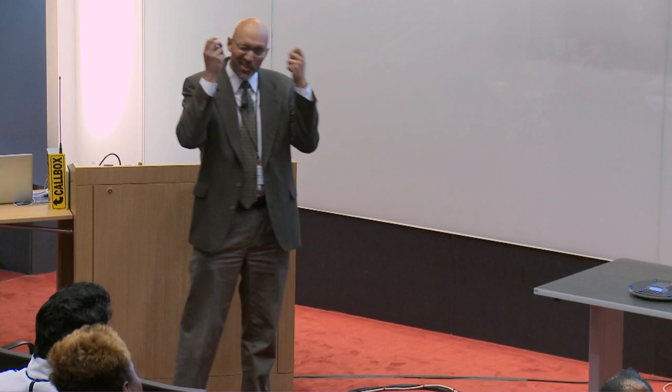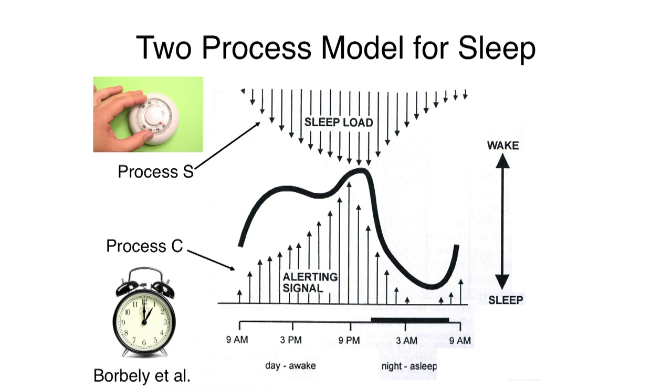There's been this framework, a simple framework, that helps us think about this scientific problem. As a scientist, if we take these complex questions — that almost seem impossible to answer — and kind of break them down into smaller and smaller pieces, we can address them. That's how we approach scientific problems. And here it's what is called the two-process model, really from Alex Borbély about 30 years ago.